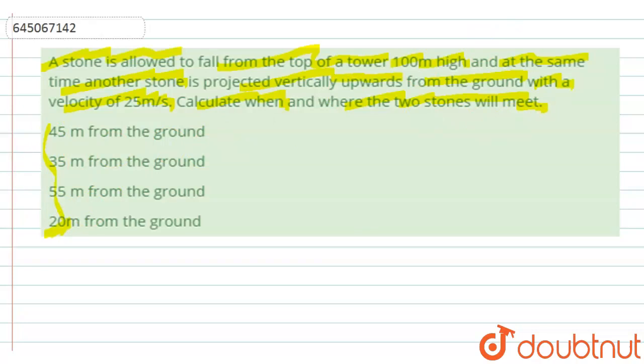Now we are given a building or a tower like this. We are having a tower of total length 100 meters, so this is the total length of the tower that is 100 meters.